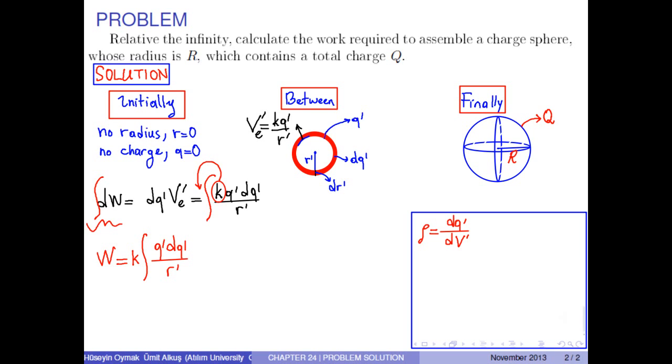Because charge Q is uniformly distributed through this sphere, the charge density can be expressed as Q over 4/3 times pi times R cubed, where the denominator is the volume of the whole sphere.